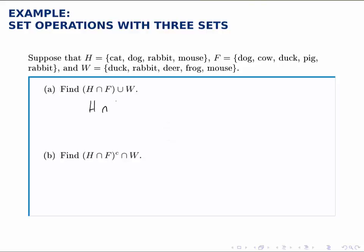First then, take H intersected with F, so we look for all the elements that are in both H and F. Notice that you find rabbit is in both of them, and dog is in both of them. And those are the only two things that belong to both of those sets. So we write dog and rabbit.